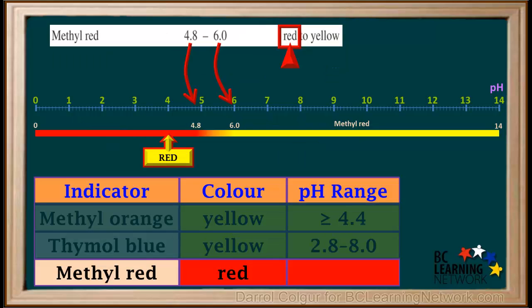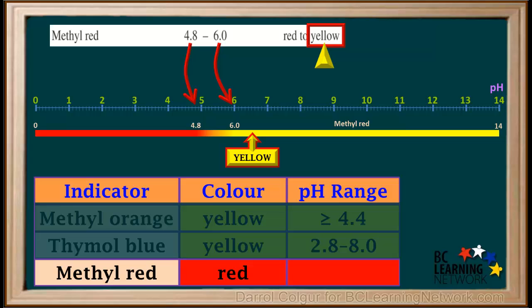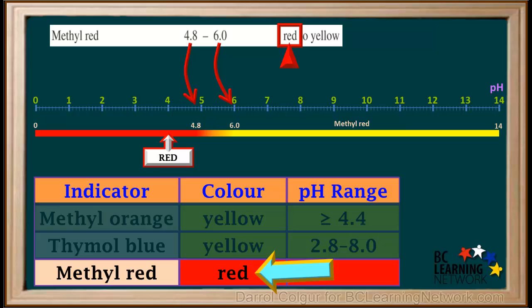The line for methyl red on the indicator table tells us that methyl red is red at pHs below 4.8, orange between 4.8 and 6, and yellow at any pHs above 6. The table shows that methyl red is red in solution A, so this indicator tells us the pH is less than or equal to 4.8.